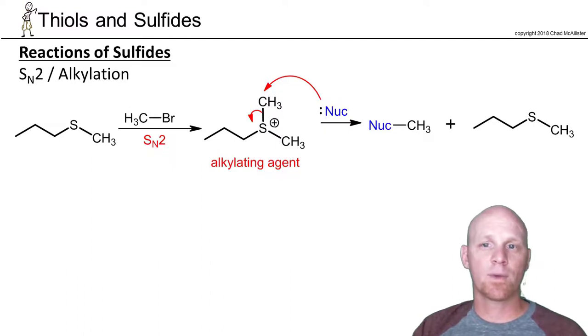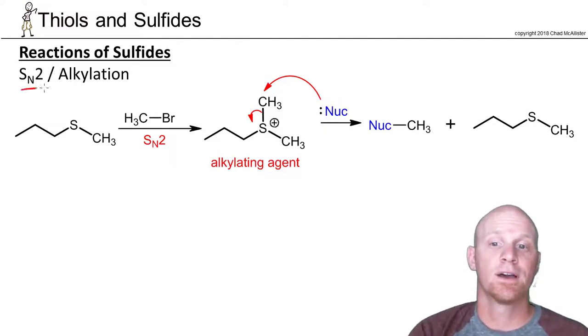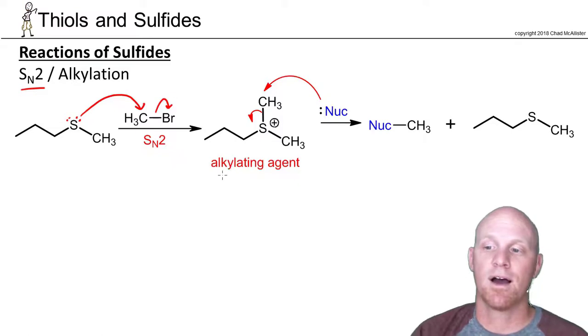Just as the primary way we make a sulfide is through SN2, it turns out it's also one of the major reactions they do. Now a sulfide, even without a negative charge, sulfur is large enough and polarizable enough that this is actually still a pretty decent nucleophile. We could do backside attack on like a primary methyl halide, kick off the leaving group, and form this species.